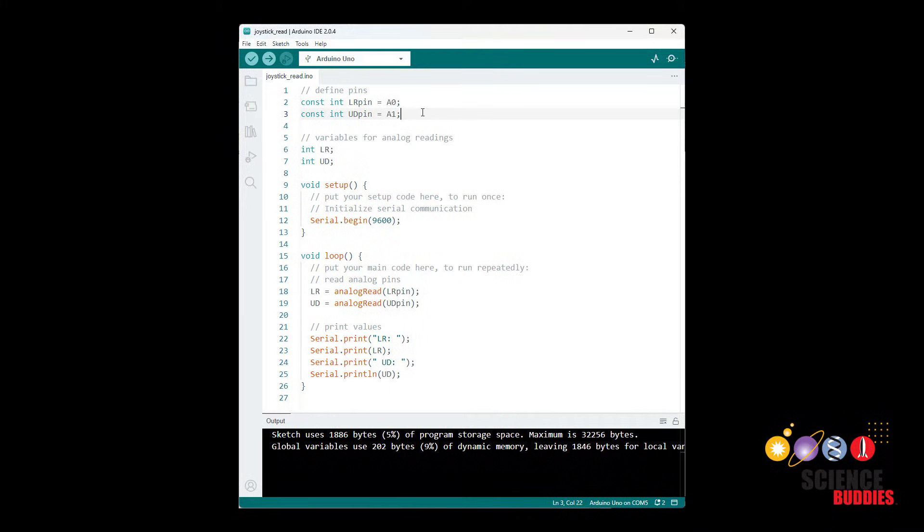Let's take a look at the relatively simple code I'm going to use to read the values from the joystick and print them out to the serial monitor. First I define which pins I'm going to use and define variables for the left-right and up-down values. In the setup function all I need to do is initialize serial communication, and then in the loop function I use the analog read command to read the two analog pins, followed by the serial print command to print out the values.